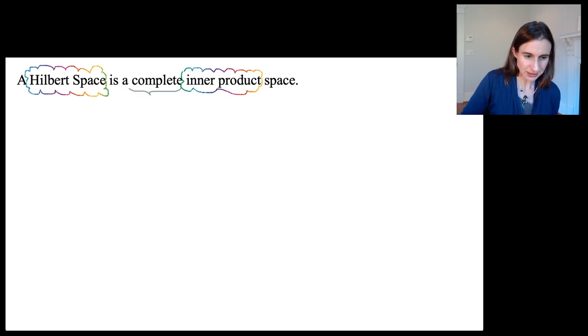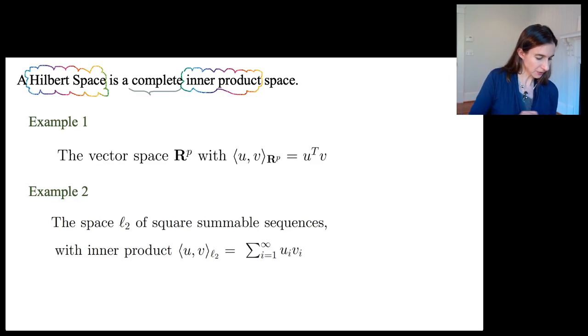So let's give some examples here. The first example is the vector space R^p with the standard inner product. I think you could believe that this would be a valid inner product and you could check those three conditions, the symmetry, bilinearity, and the strict positive definiteness.